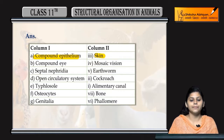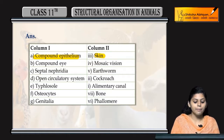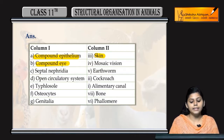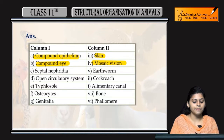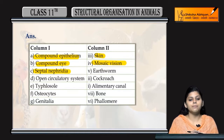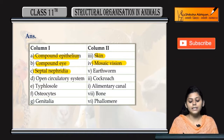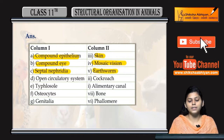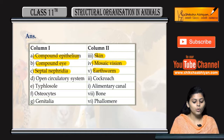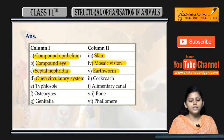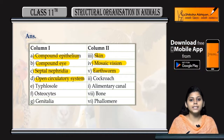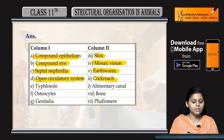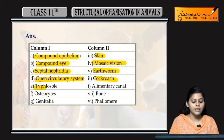So compound epithelium kaha present hota hai? Skin mein. Compound eye kis se related hai? Mosaic vision se. Septal nephredia kis mein milta hai? Earthworm mein. Open circulatory system kis ka feature hai? Cockroaches mein open circulatory system hota hai.